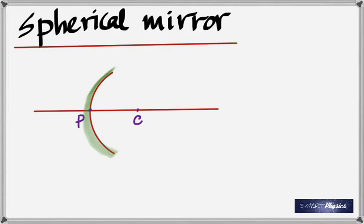Which side is reflecting? The shaded surface is not the reflecting one — it's the other side. So it's the inner side. This is called a concave mirror, just like the palm of the hand — it reflects the inside. But if the outside were reflecting, it's a convex mirror. Concave: the inside of the sphere reflects. Convex: the outside reflects.